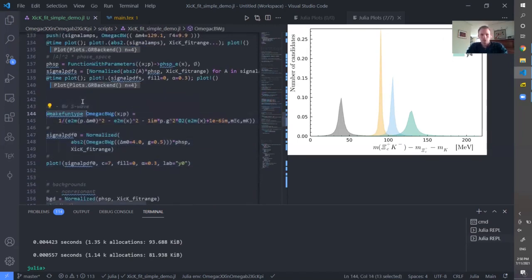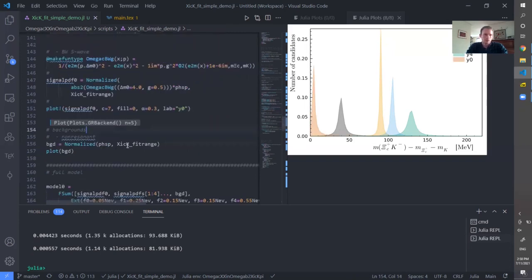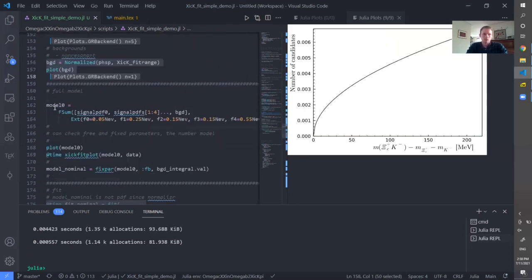For the threshold structure, I use a little bit different function. And this is a third way to construct the function with parameters by passing this definition to the macro that creates a type OmegacBreitWignerG. And then this type with the parameters creates an instance.